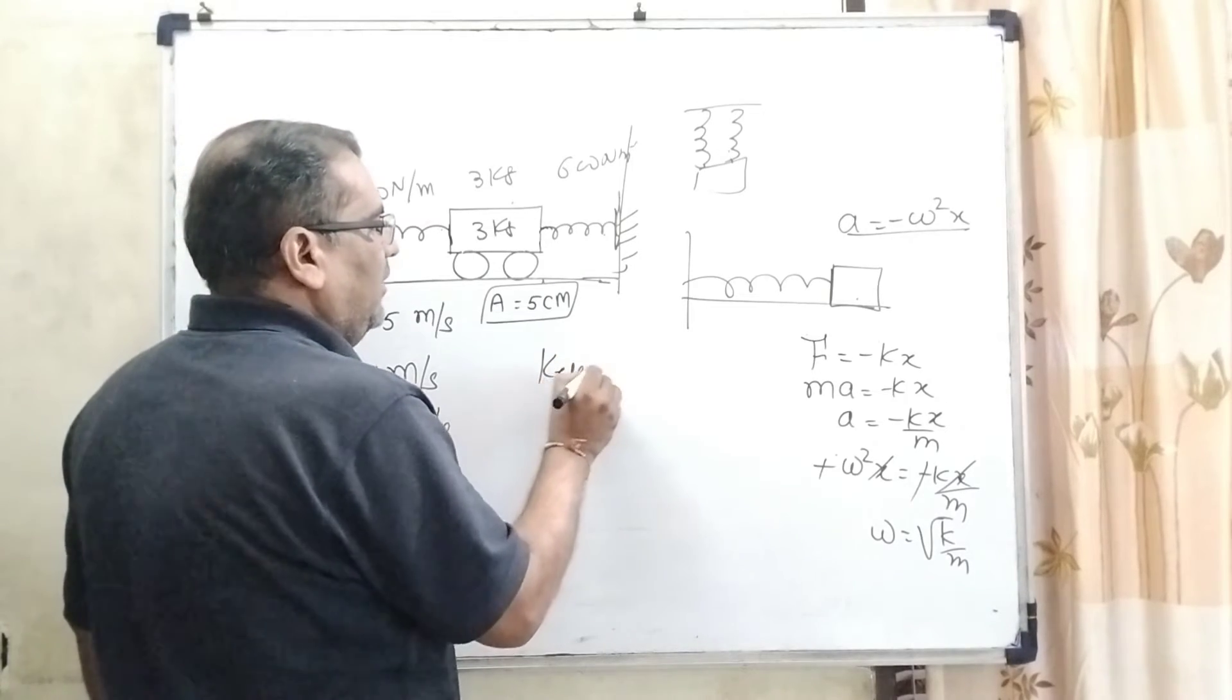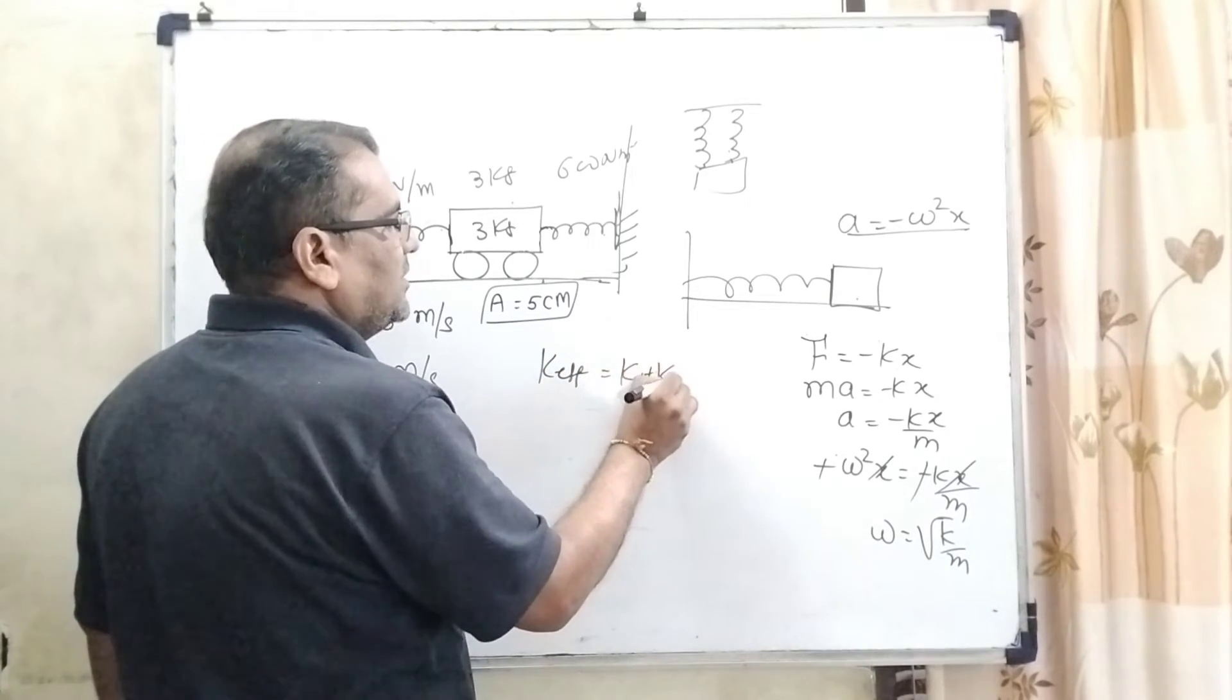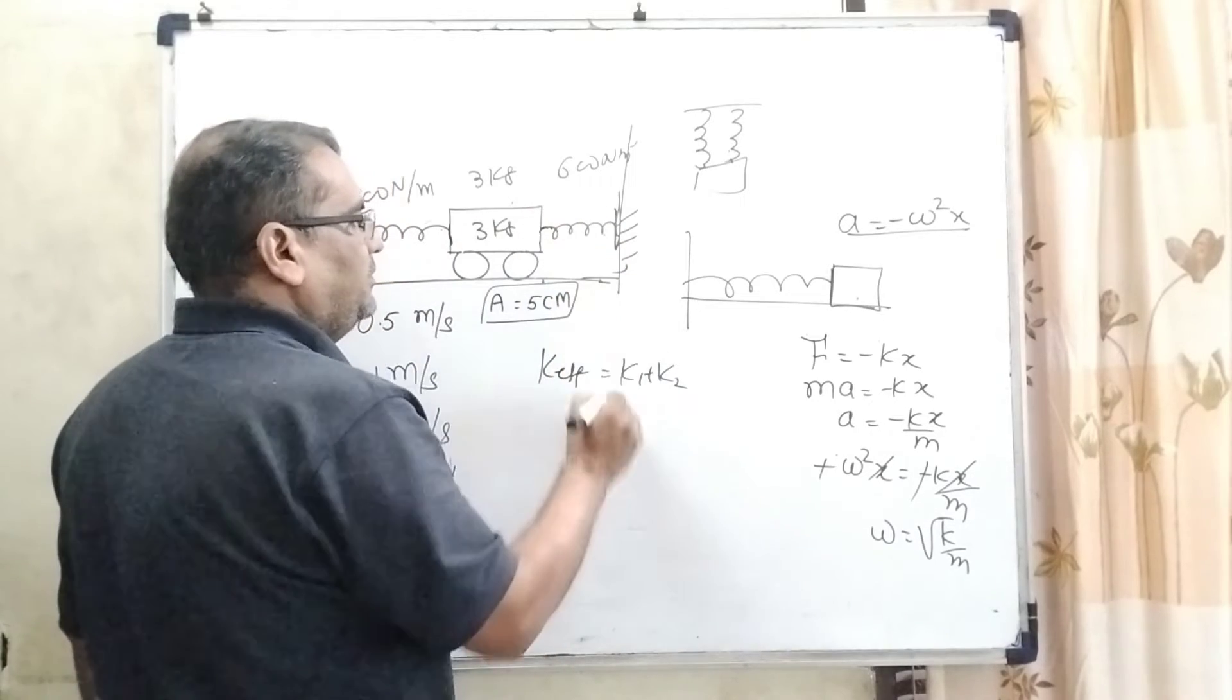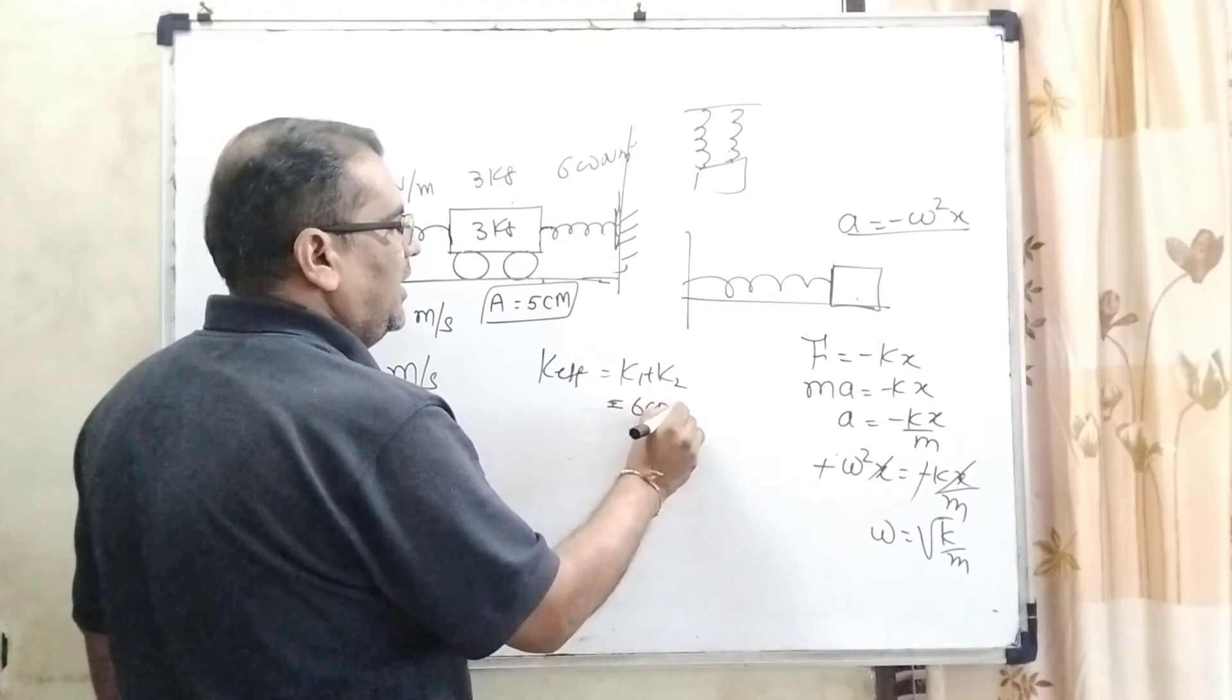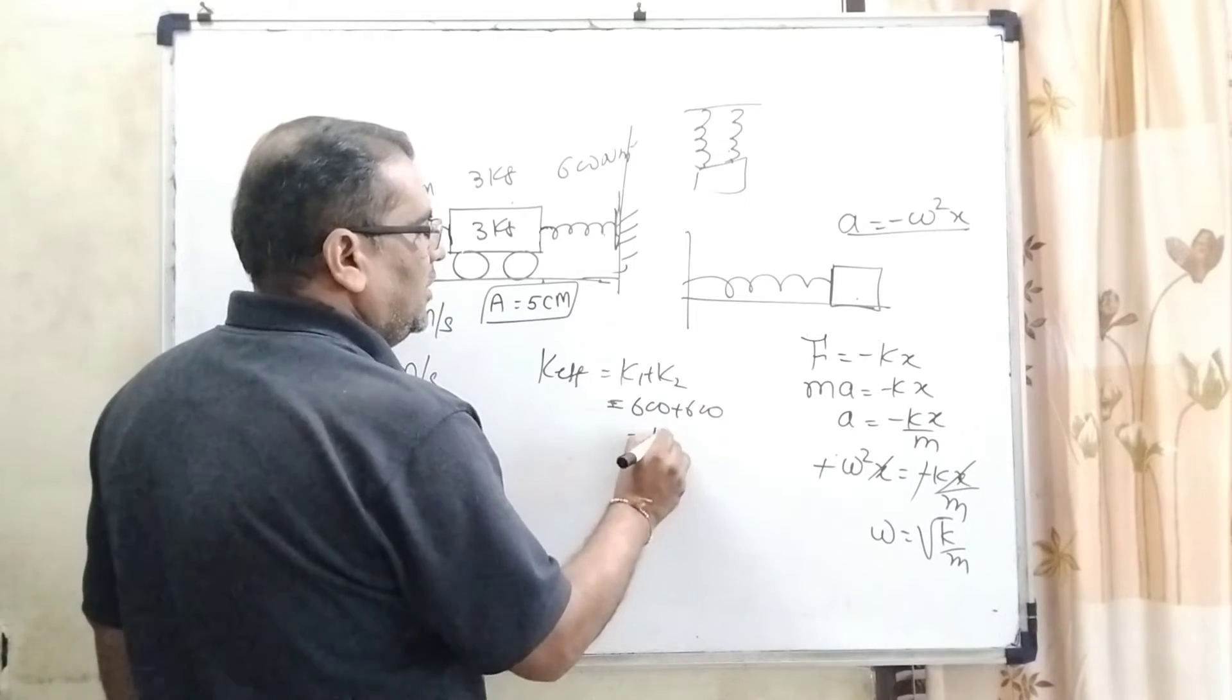And for effective k, effective k can be written as k₁ + k₂. Now, here the spring constant is the same. So therefore, 600 + 600, how much? 1200.